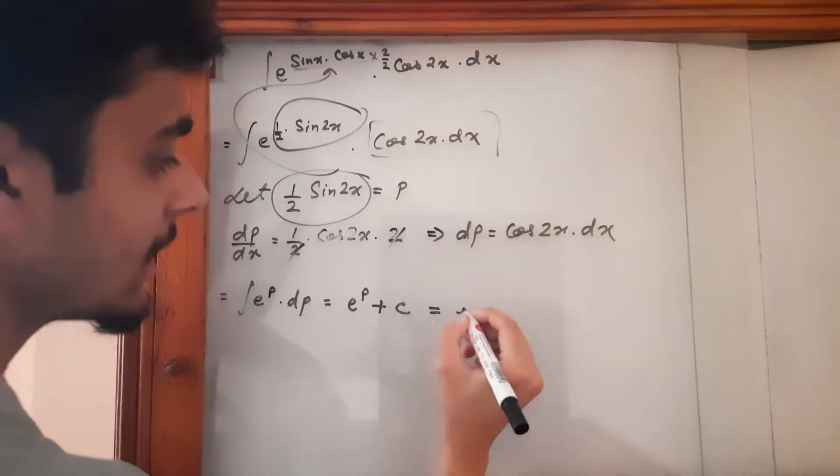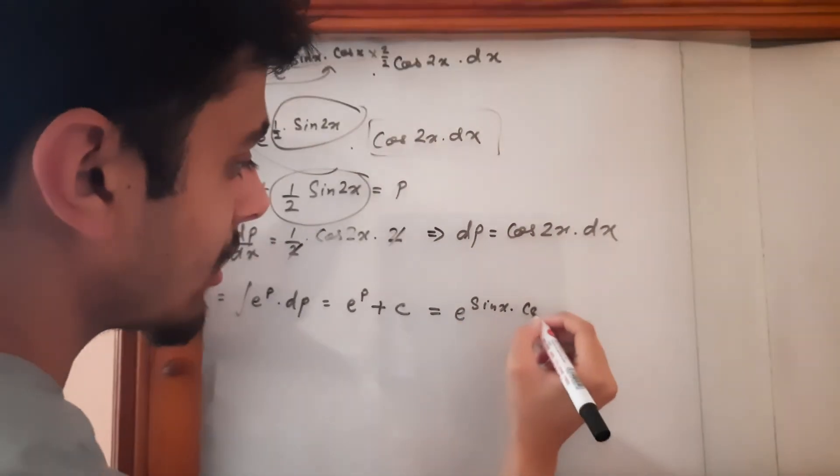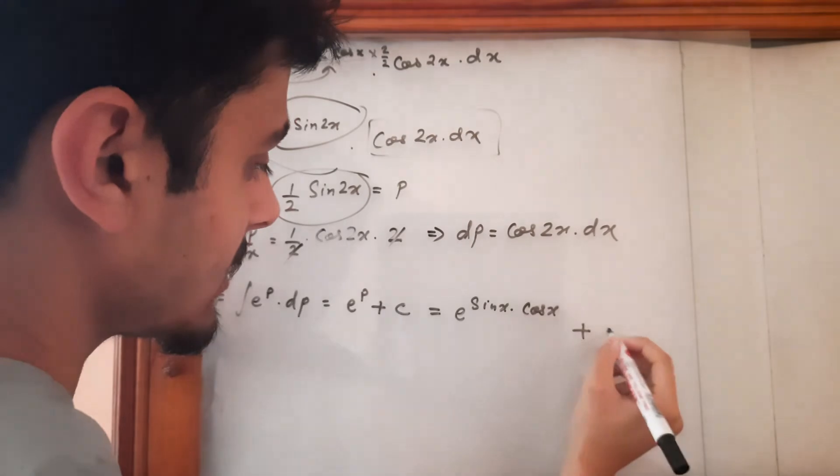So the final answer would be e to the power sine x times cos x plus c.